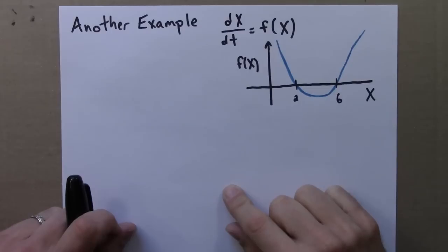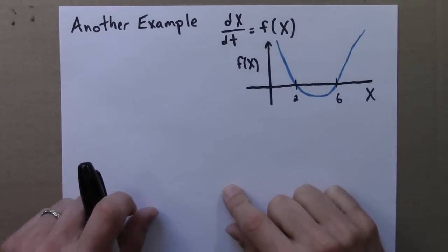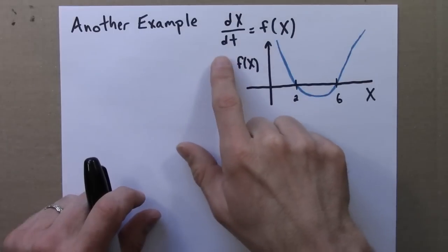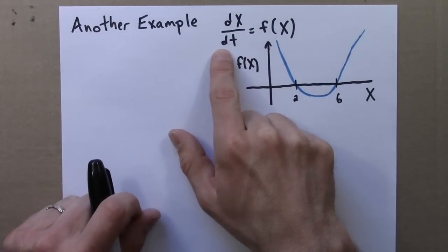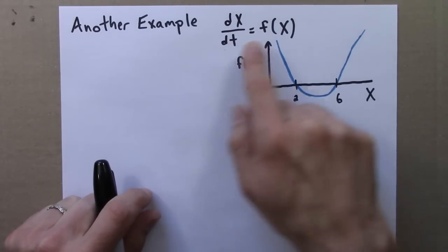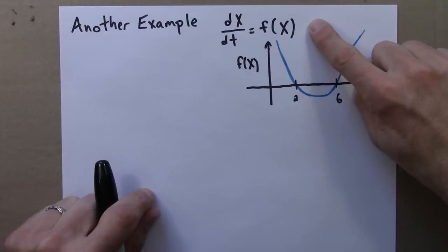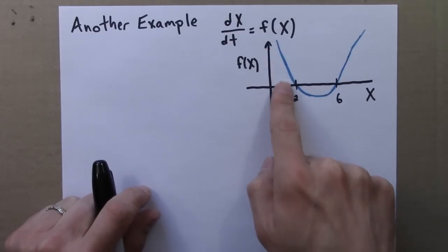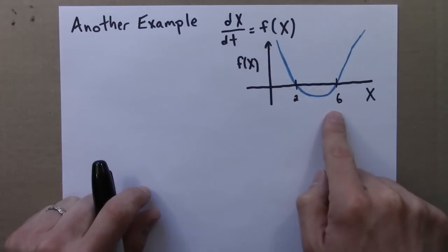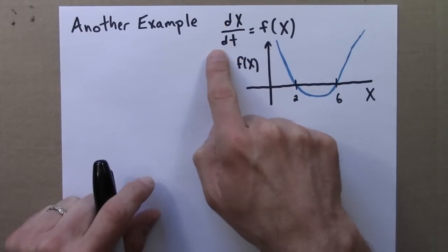Let's do another example illustrating this qualitative approach to differential equations. The derivative of x, the rate of change of x, is some function of x. This time I'm not even going to write down a formula for f(x). I'll just show the graph of f(x), this blue curve. Different values of x have different values of the derivative.